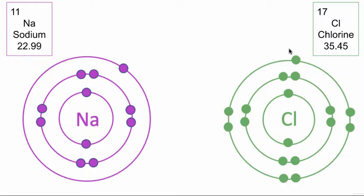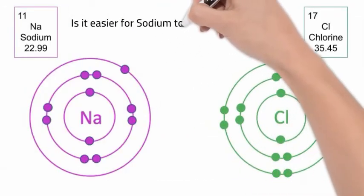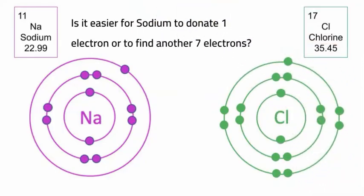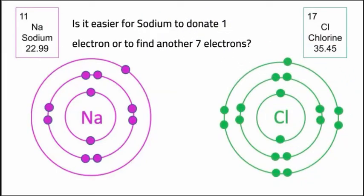Now a question I'm often asked is how do we know whether an atom is going to donate or accept electrons? Consider this. Look at sodium. Sodium has one electron in its outermost shell. Is it easiest for sodium to lose that one electron in order to move down a number of orbitals and therefore have a full outer shell, or is it easier for sodium to try and gain seven electrons?